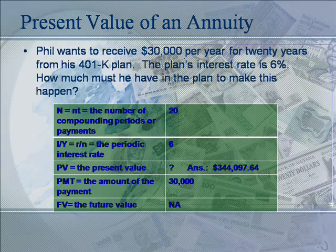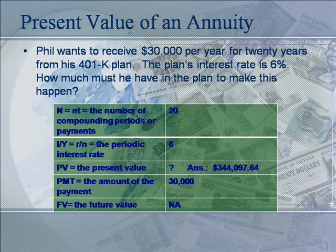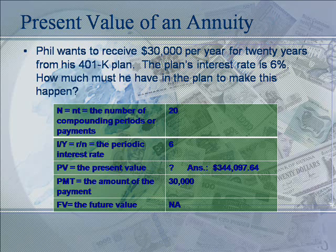Now, for our last example, let's find the present value of a series of equal payments, or an annuity. Type in 20 and press N, because it's 20 years. Type in 6 and press I/Y for the interest rate. Type in 30,000 and press PMT for payment. Finally, in order to compute this, press CPT and press PV.